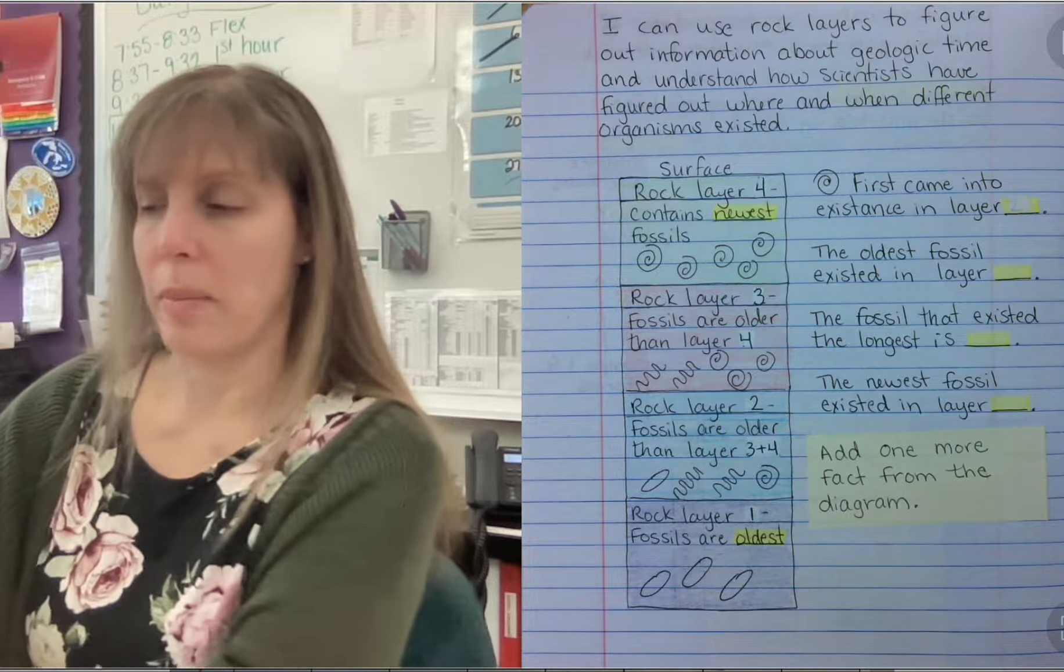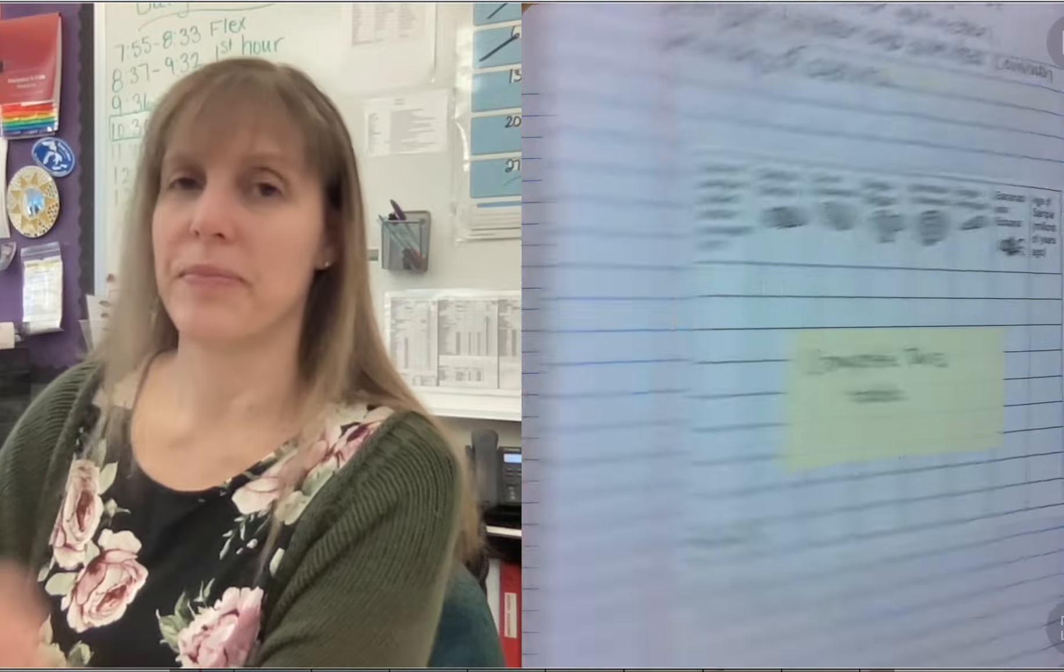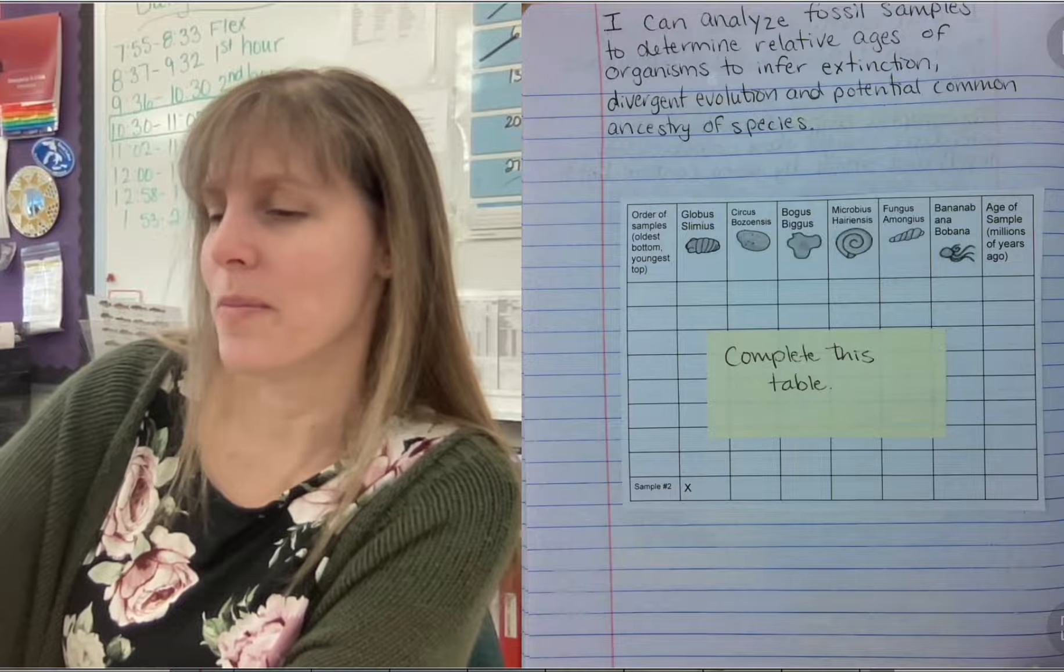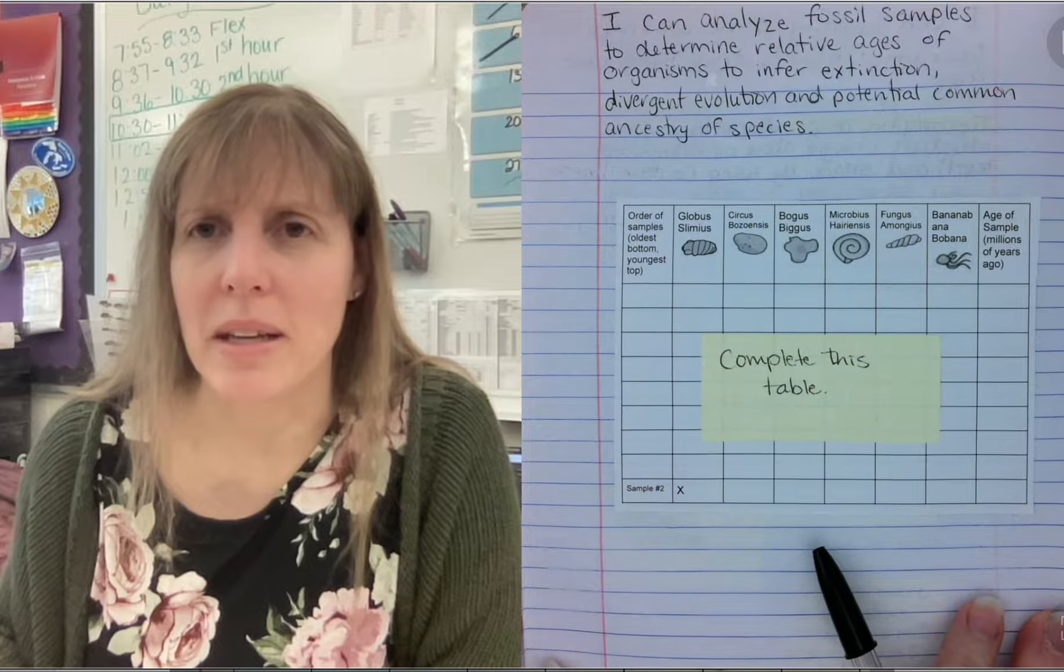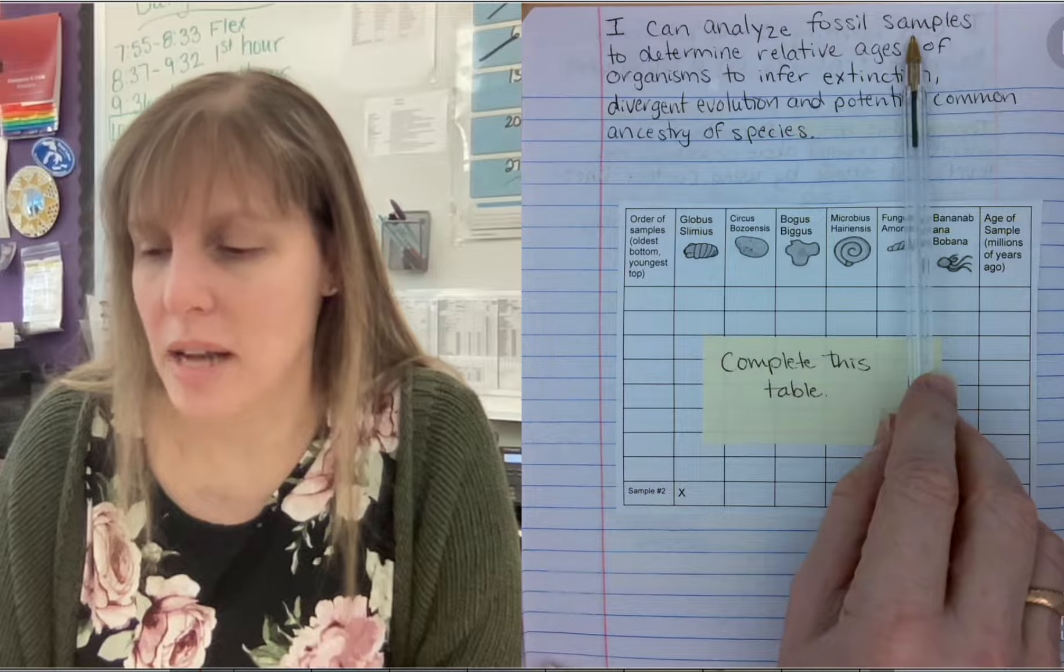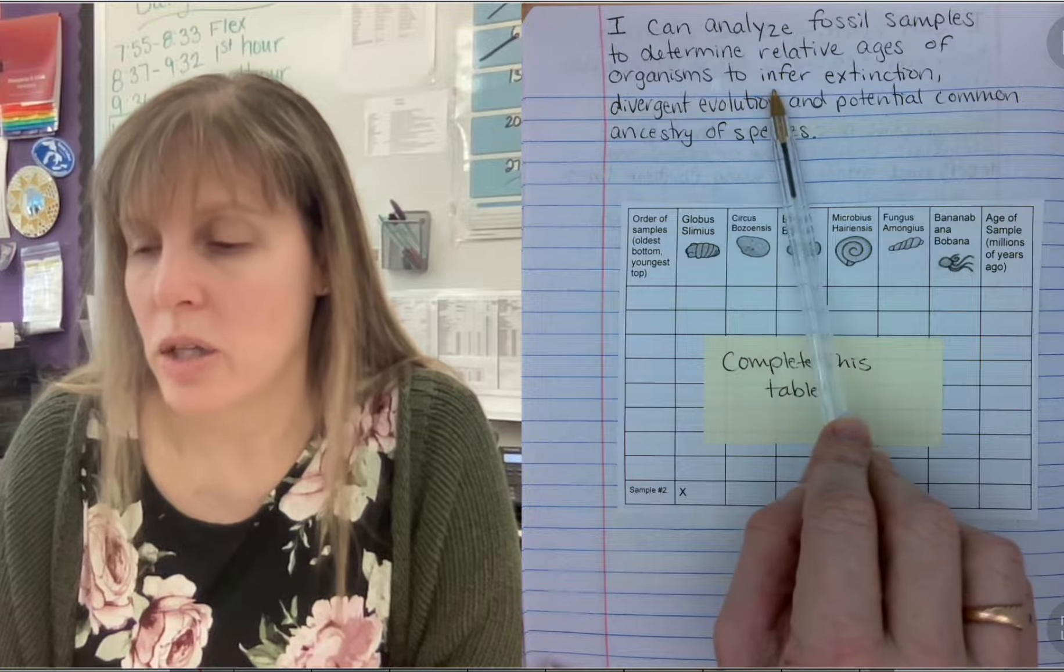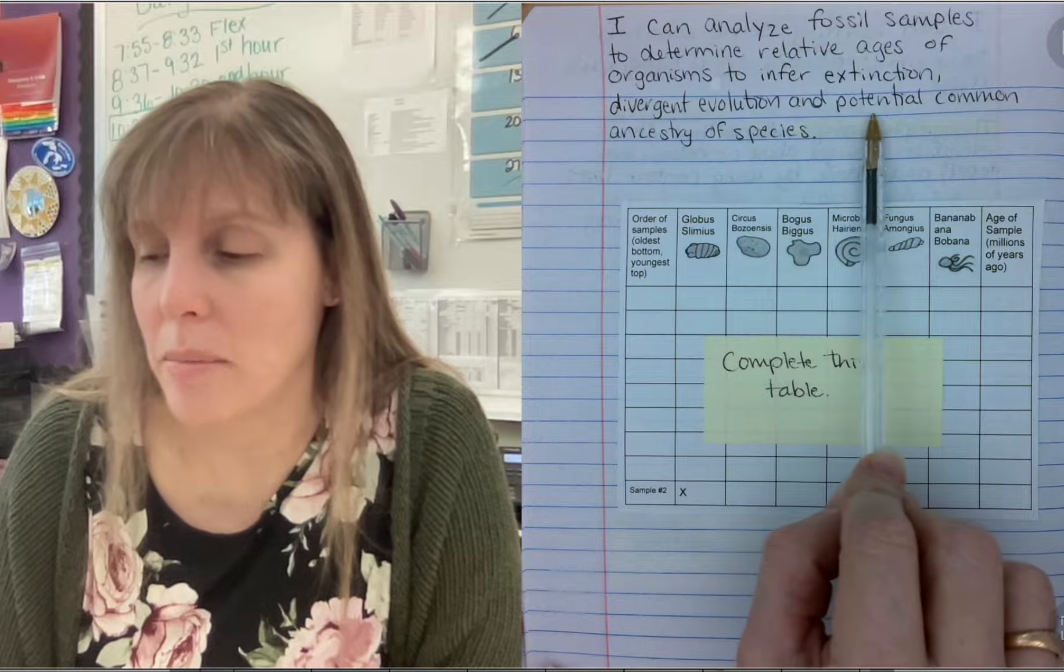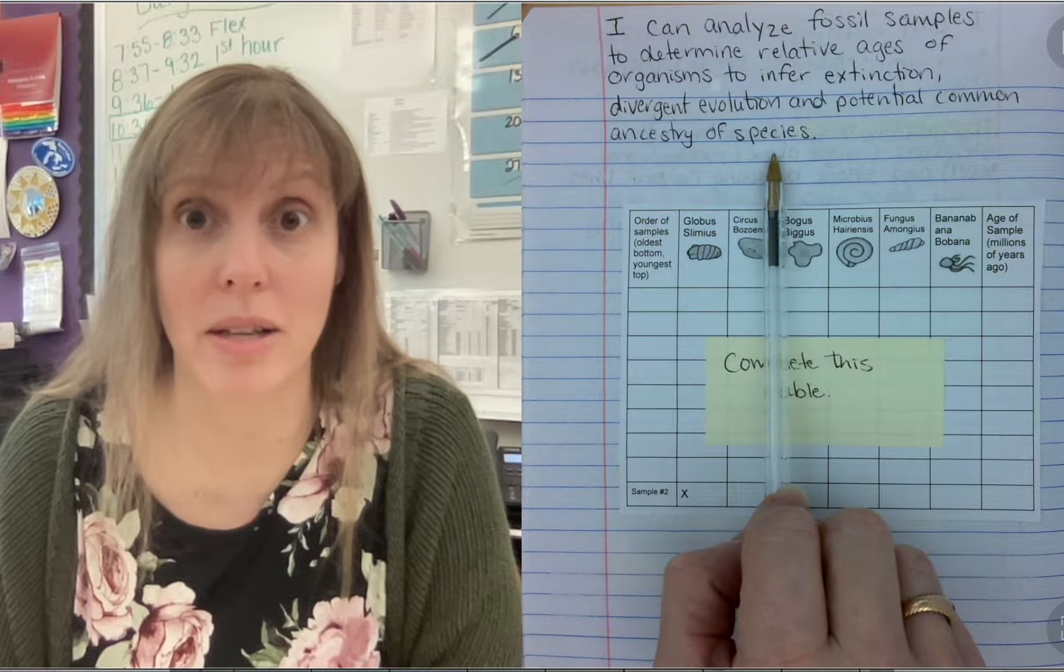Today you have a notebook page and you have a fun activity. Well, I don't know, it's not amazingly fun, but it's actually pretty cool. So our learning target today is, let me see if I can't get that illustrator, there we go. I can analyze fossil samples to determine relative ages of organisms to infer extinction, divergent evolution, and potential common ancestry of species. Oh my gosh, that's a mouthful.